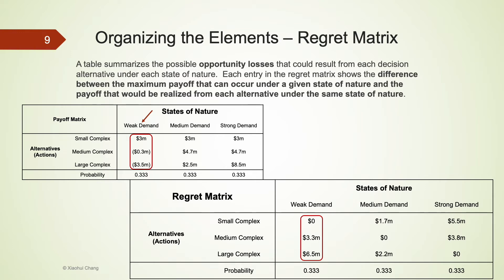if the company builds a medium complex when the demand is weak, it loses $0.3 million when it could have made $3 million by building a small complex. The difference between these two payoffs is $0.3 million.